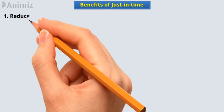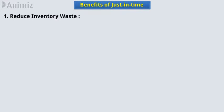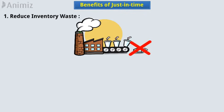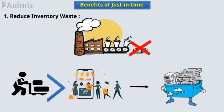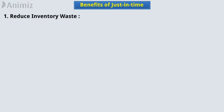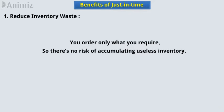1. Reduce inventory waste. A Just-in-Time method eliminates overproduction, which occurs when the supply of an item in the market overreaches the demand and leads to an accumulation of unsaleable inventories. In a Just-in-Time method, you order only what you require, so there is no risk of accumulating useless inventory.